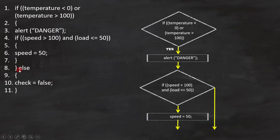That means if condition 1 fails, we have to execute line 10: check equals false. In flowchart, this is how we have to represent it.